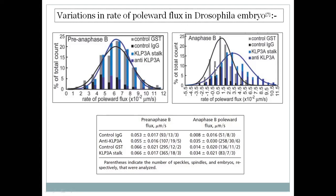During anaphase B, the inhibited samples show a much higher rate of poleward flux compared to controls. In the controls where KLP3A expresses itself, poleward flux is suppressed. The values are 0.008 and 0.014 for controls, whereas the inhibited samples show higher values. We can therefore conclude experimentally that KLP3A suppresses poleward flux — not completely eliminating depolymerization, but suppressing it. This is concretely proved at this point.